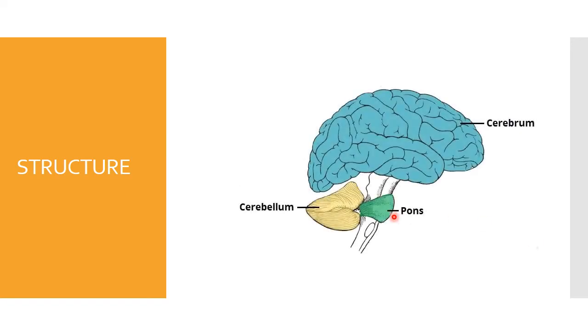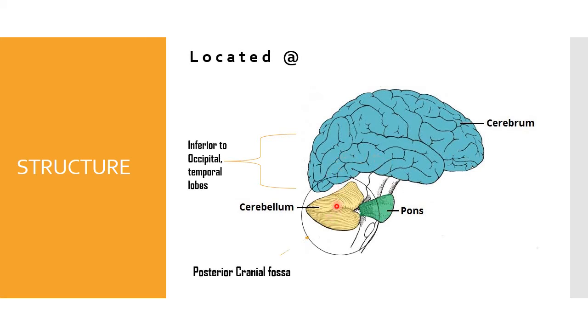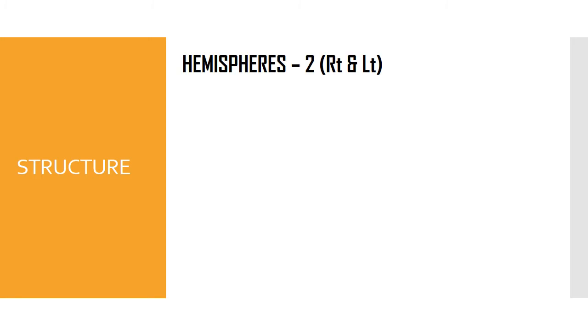The cerebellum is located inferior to the occipital and temporal lobes and is present at the posterior cranial fossa. There are two hemispheres, right and left, which control the ipsilateral side of the body — ipsilateral meaning the same side. The right hemisphere controls the right side.